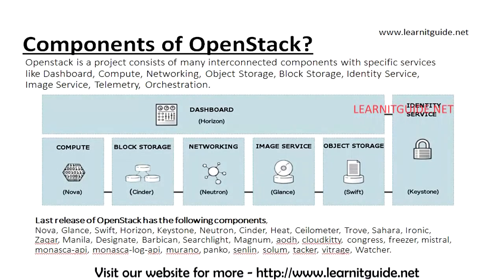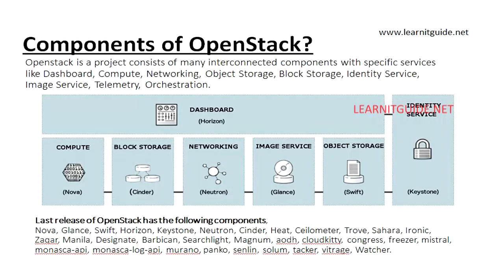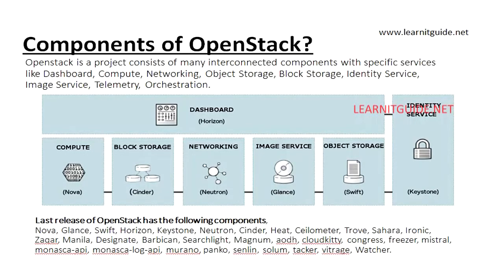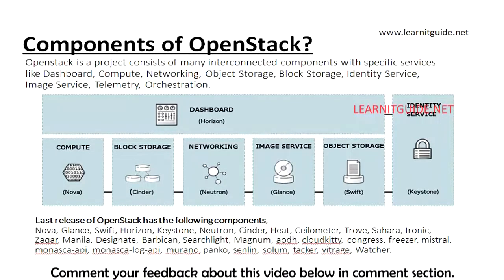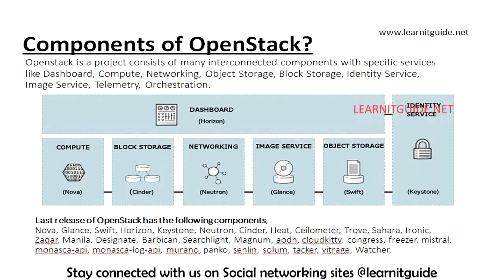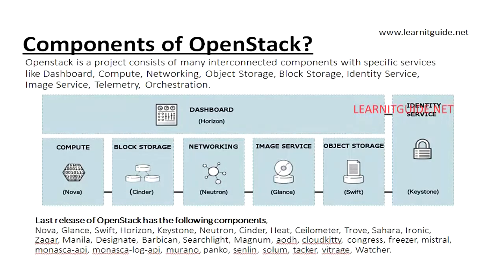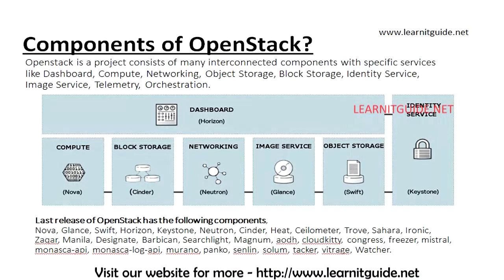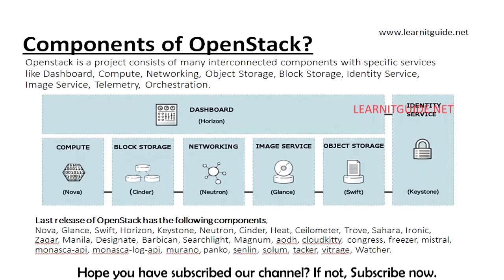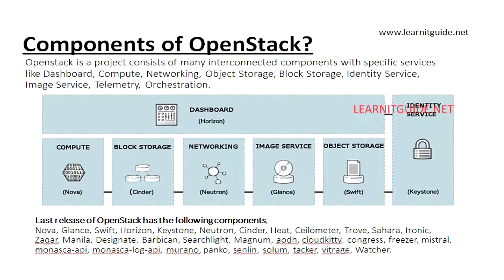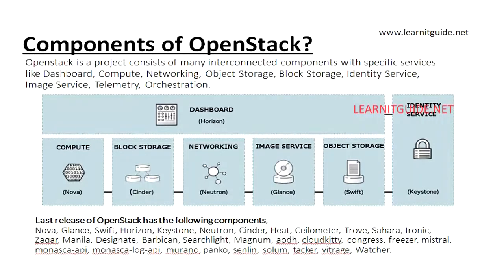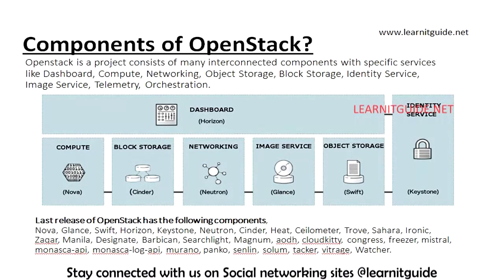Now the main important thing: the components of OpenStack. OpenStack is a project consisting of many interconnected components like dashboard, compute, networking, object storage, block storage, identity services, image services, telemetry, and orchestration. These components fulfill infrastructure requirements like storage, server, networking, image services, and computing nodes for scalability and high availability. They have developed these components to fulfill infrastructure requirements from a centralized managed portal. In the latest release of OpenStack, the following components are included.